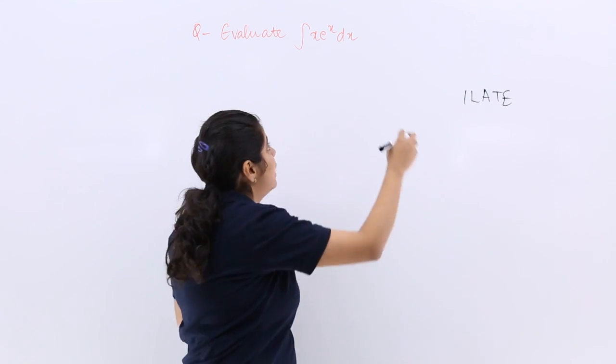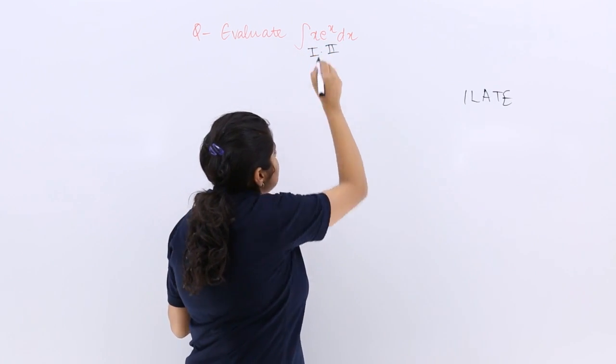Exponential function is there which should come in the last. So this is your second function and this is your first function.